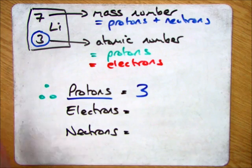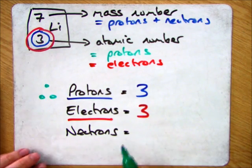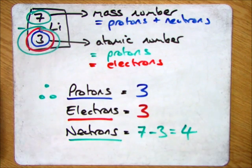So the protons is always the bottom number, in this case 3. The electrons is the same, which is 3. And to work out the neutrons, it's that top number, take away the bottom number, 7 minus 3, which is 4.